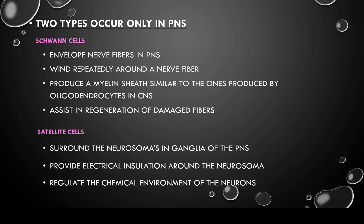Two types of glial cells occur in the peripheral nervous system. Schwann cells envelop nerve fibers with the myelin sheath and assist in the regeneration of damaged fibers. Satellite cells surround the neurosomas in the ganglia of the peripheral nervous system, providing electrical insulation around the neurosoma and regulating the chemical environment of the neurons.